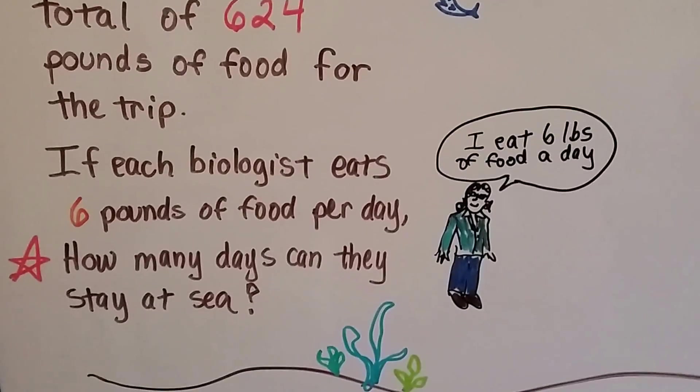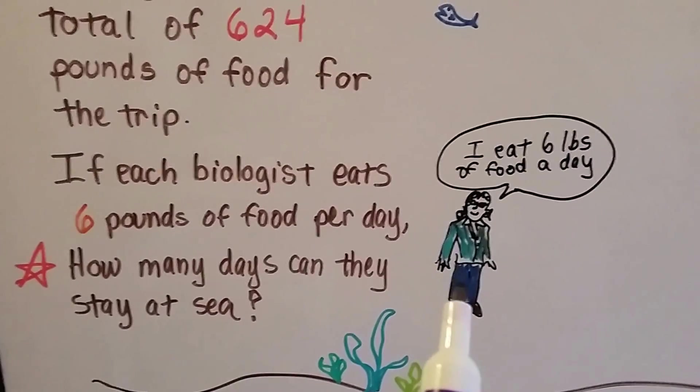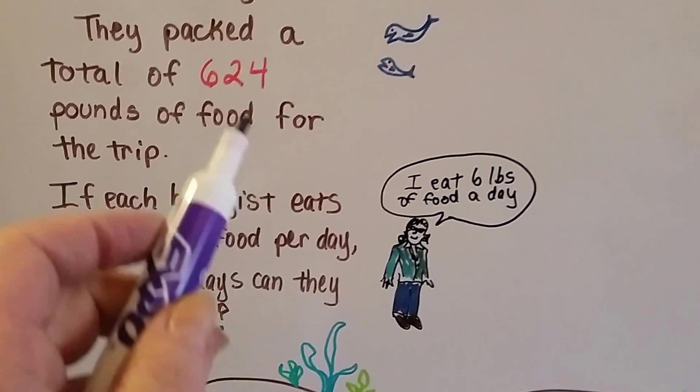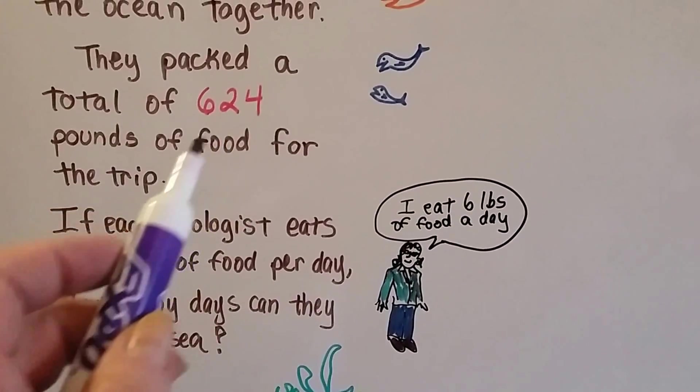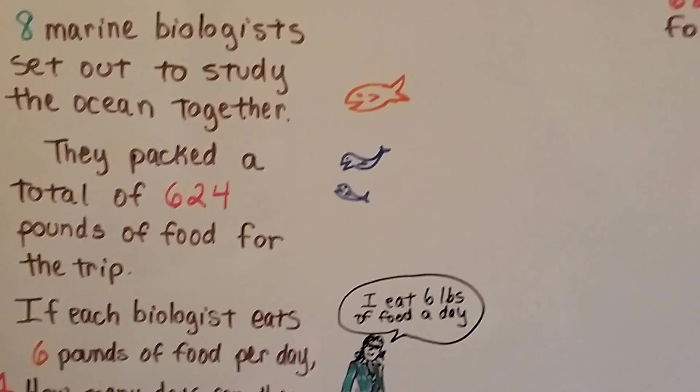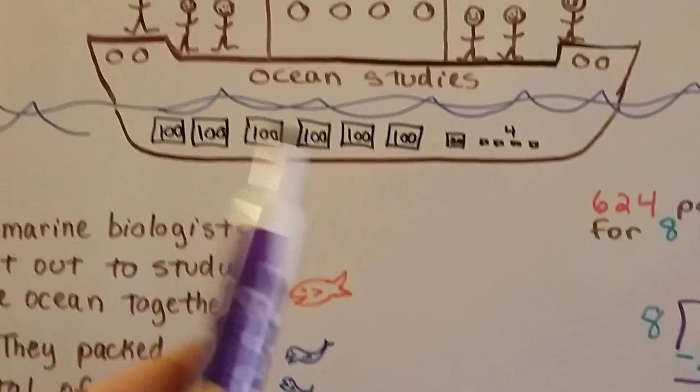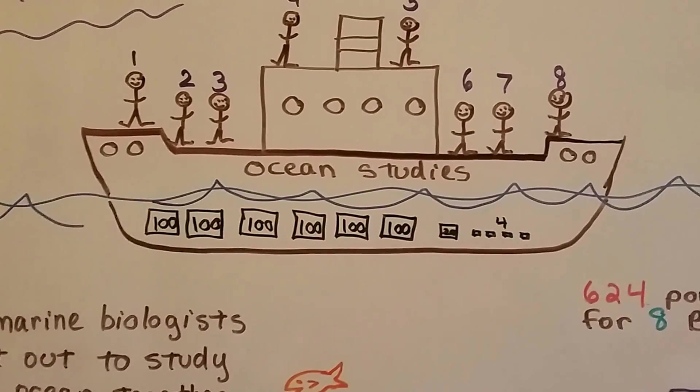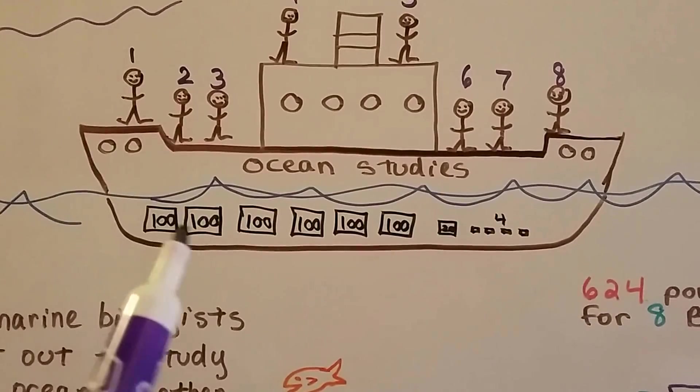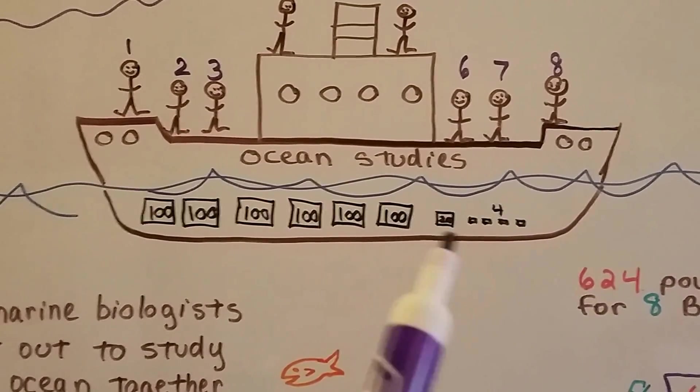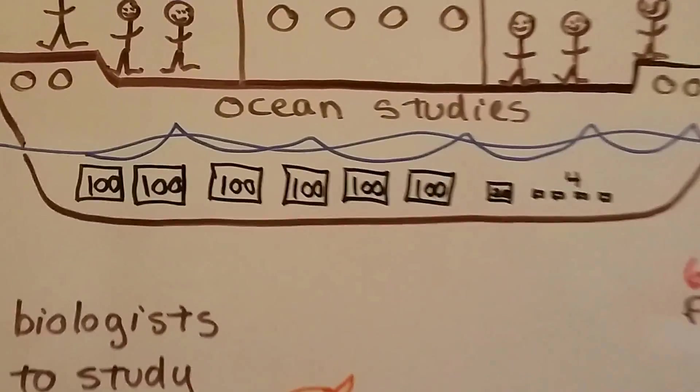So each biologist eats 6 pounds of food per day. They packed 624 pounds of food aboard the ship. But we want to figure out how many days they'll be allowed to be out at sea with that amount of food. So here we have our 600, our 20, and our 4 pounds of food.